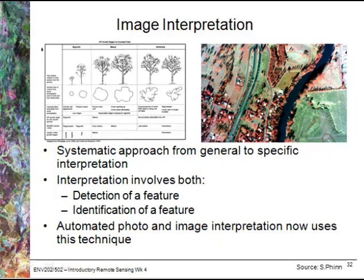It's really important when we look at image interpretation to take a systematic approach, and we'll go through an approach that goes from general to specific information. What we need to be able to do is to detect features and then also to identify what those particular features are. This is a manual process, but it's also important to note that image processing systems now try to use the same techniques.